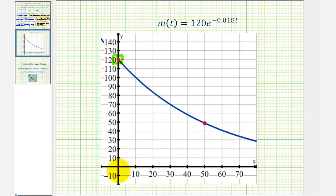And then when we found the amount remaining after 50 years, we found the function value here at t equals 50. I hope you found this helpful.